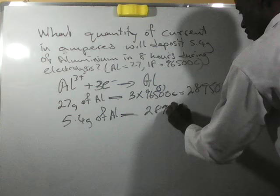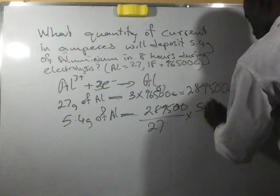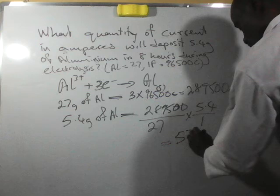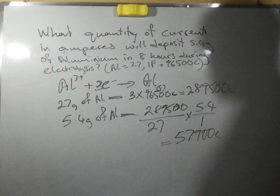Which will be equal to 57,900 coulombs. That's the quantity of electricity that will deposit 5.4 grams of aluminum.